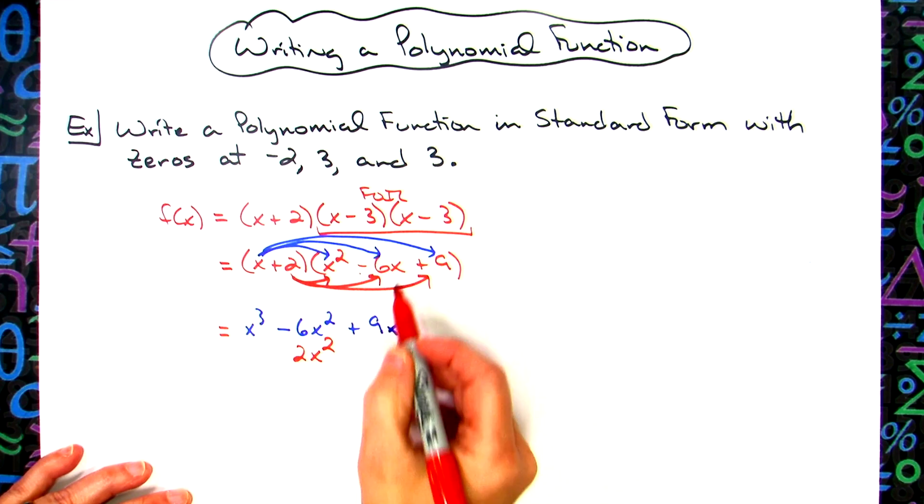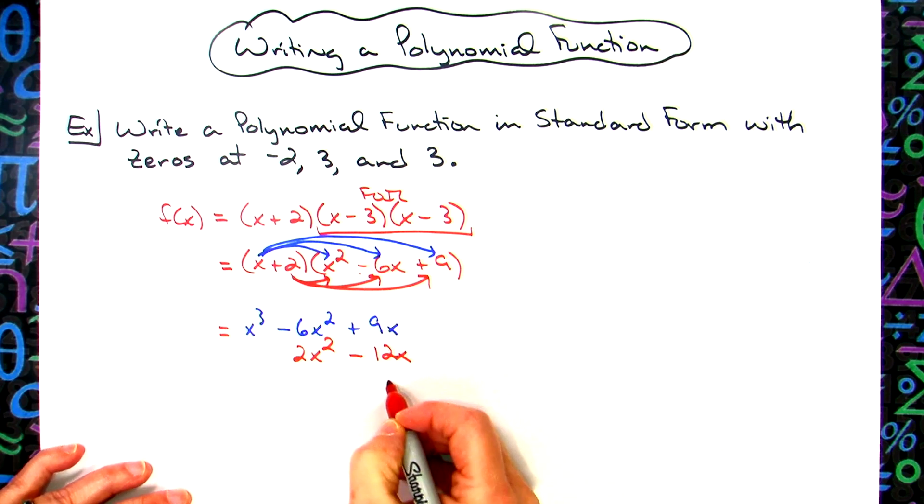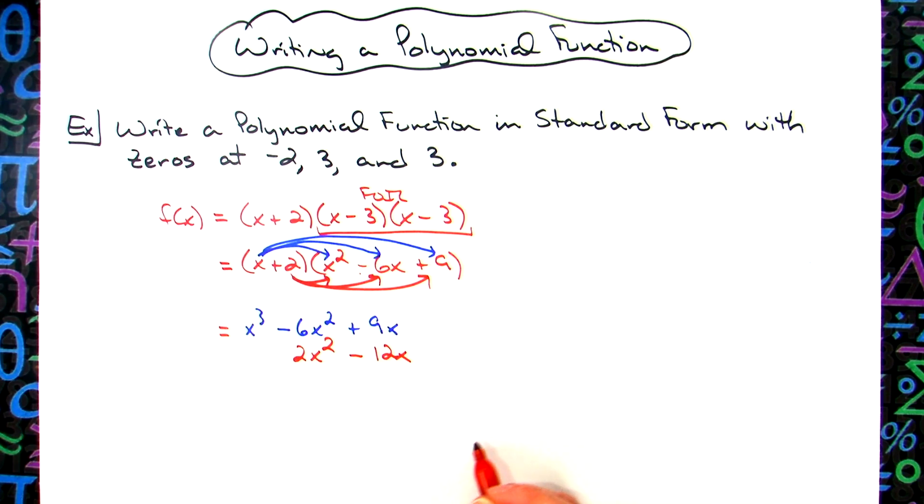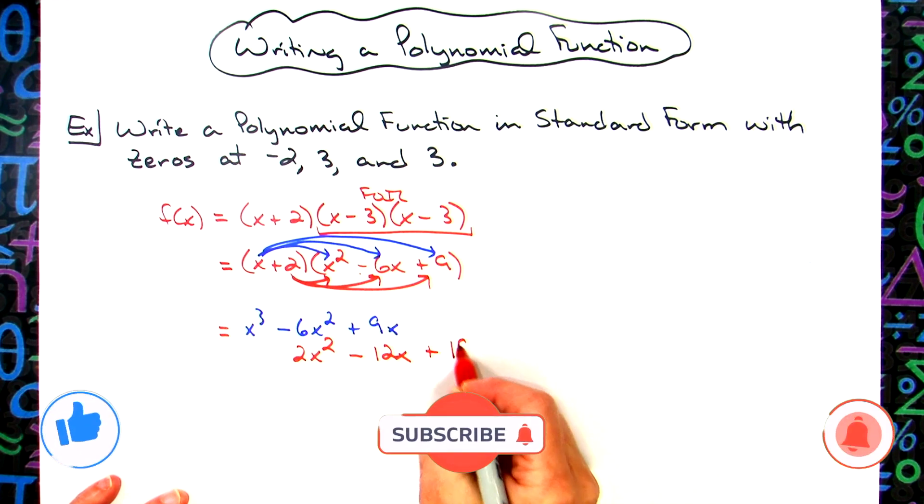Two times the negative six x is going to give me a minus 12x. Again, lining it up with terms that I already know that are going to be like terms. Two times that nine then is going to be an 18.